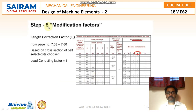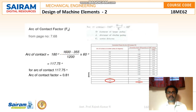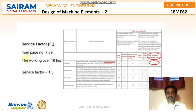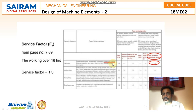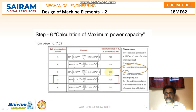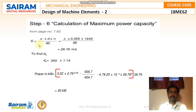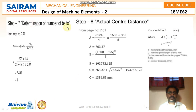From the table for D cross-section, the standard nominal belt length is selected as 6124 mm. The length correction factor fc is obtained from the table based on belt cross-section. The load correcting factor is 1. The arc of contact = 180° − ((D − d)/C × 60°) = 180° − ((1600 − 355)/1200 × 60°) = 117.75°, giving an arc of contact factor fd ≈ 0.81. Since the working hours exceed 16 hours, the service factor fa = 1.3. The maximum power capacity for D cross-section belt is calculated as 25 kW.